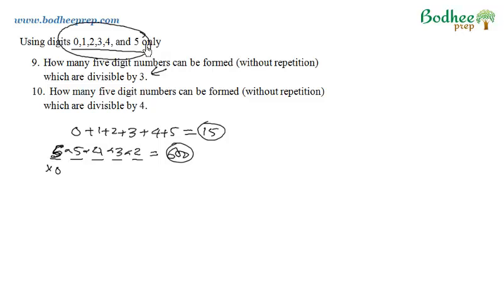So in every number, one of the digits out of these 6 digits would be skipped. For example, one of the numbers in this 600 would be 1, 2, 3, 5, and 0. If you add them, the sum of the digits would be 11 and that is not divisible by 3.